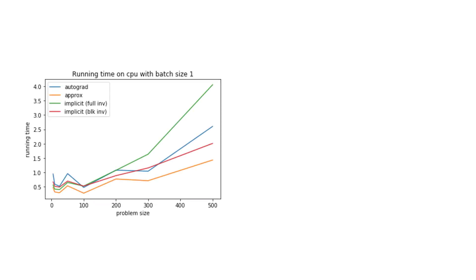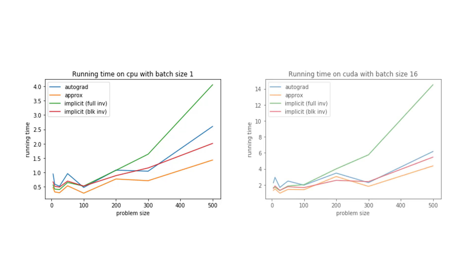We can compare the running time of unrolling the sinkhorn iterates using automatic differentiation with implicit differentiation. Here we show the running time for computing the full inverse of A h inverse A transpose as well as the block inverse variant. We also show the running time for the approximate gradient. The implicit differentiation method with block inverse is slightly faster than automatic differentiation of sinkhorn and significantly faster than taking the full inverse. A similar trend can be seen on the GPU where all methods can make use of parallelization for larger batch sizes.